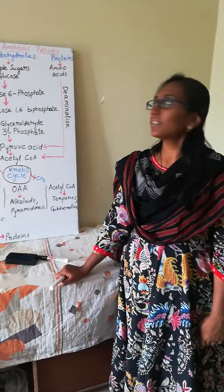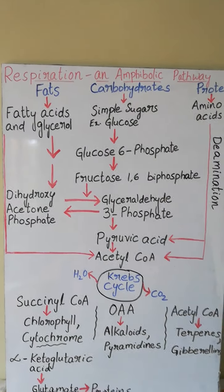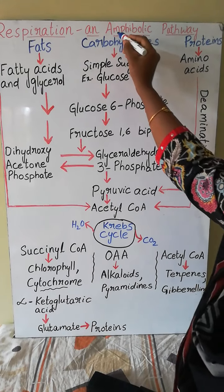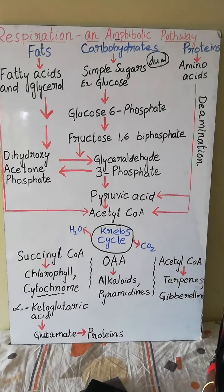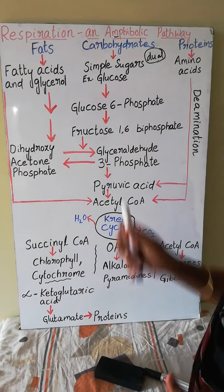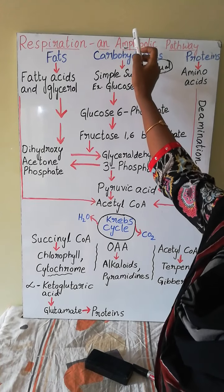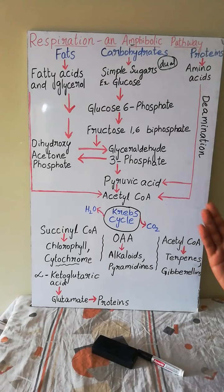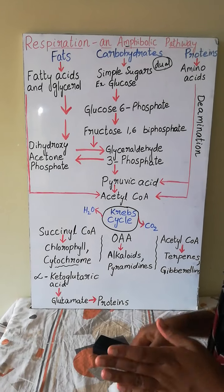Today I am going to discuss about amphibolic pathway — that is, respiration is an amphibolic pathway. The name itself: amphi means dual in nature, dual role. So amphibolic pathway means it has dual nature, meaning it is involved in anabolic process as well as catabolic process.